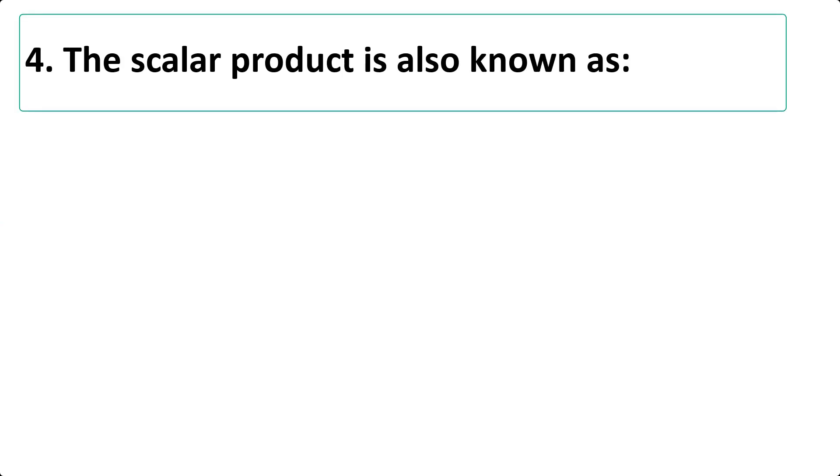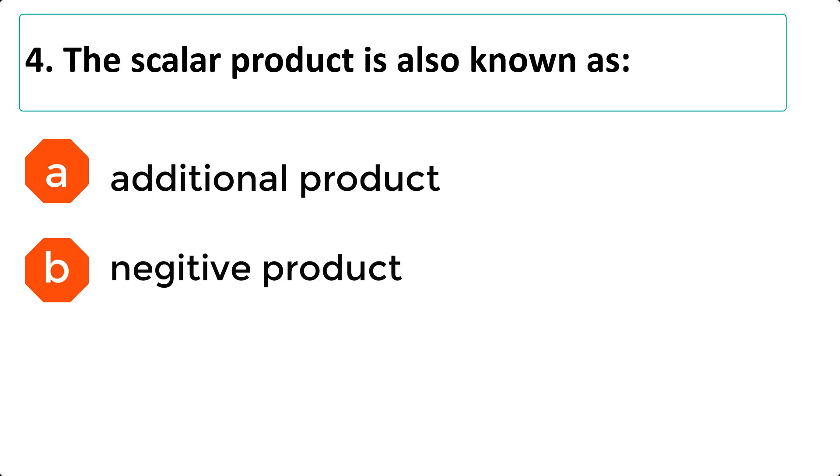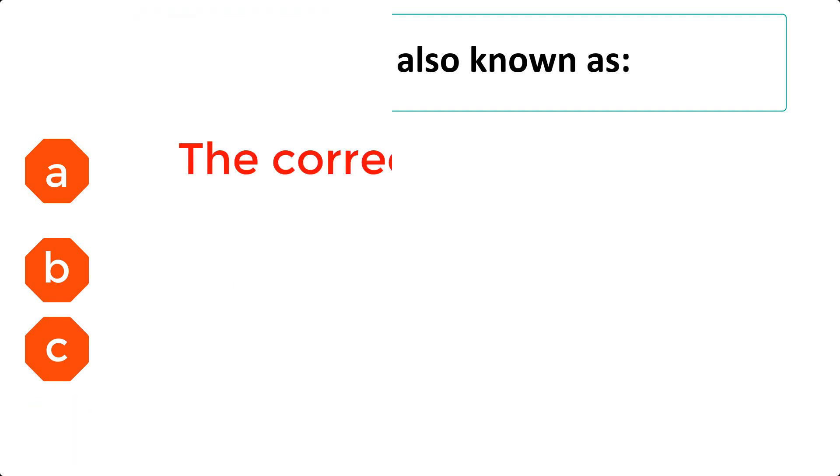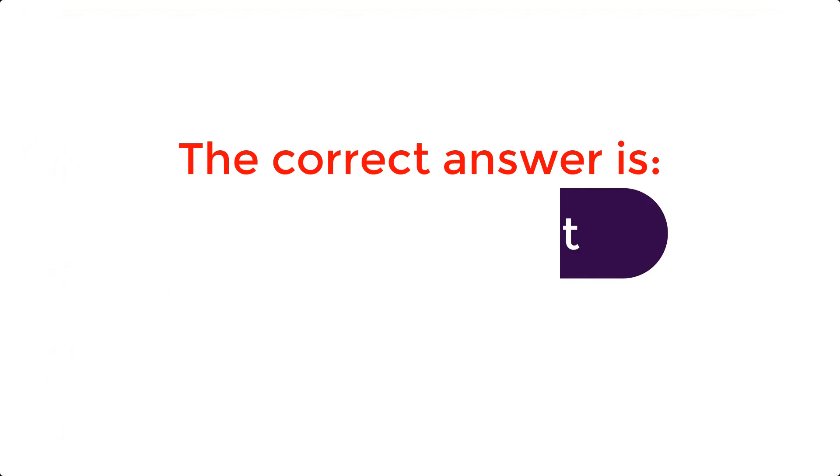The scalar product is also known as: A. Additional product B. Negative product C. Dot product D. Cross product. The correct answer is C. Dot product. Question 3.